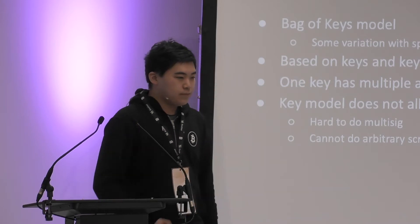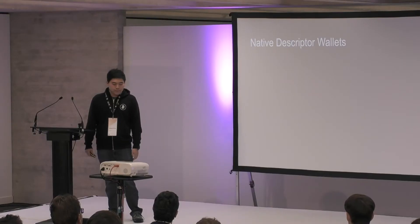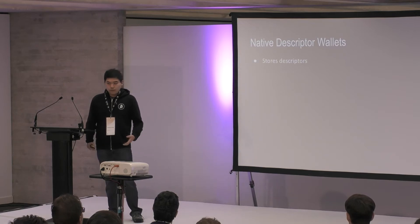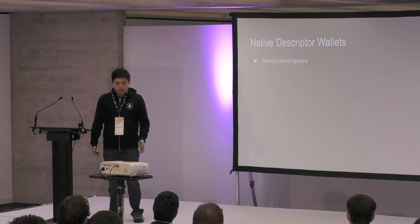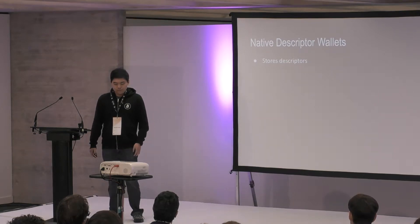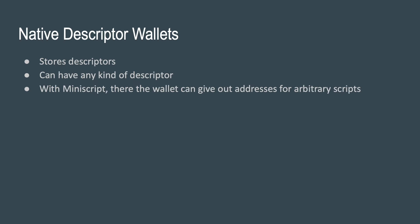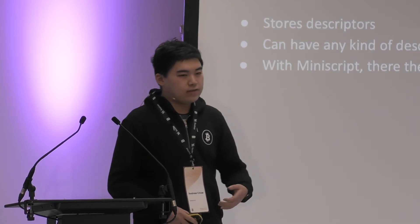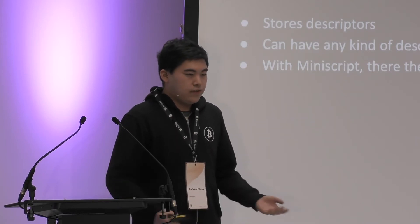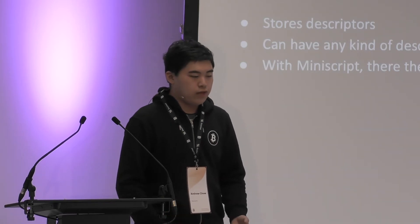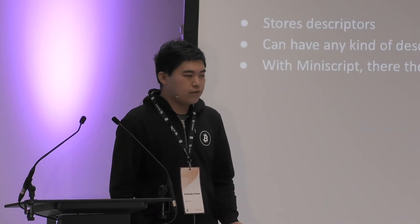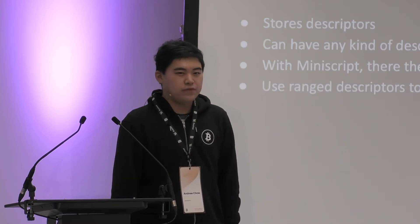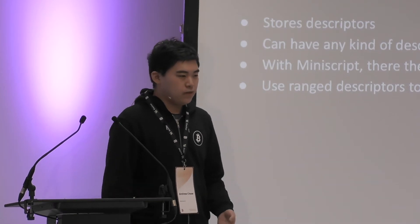The way we're going to solve this is by using descriptor wallets, and to do that we need to redesign the wallet architecture. Native descriptor wallets, as the name suggests, store descriptors. They can store any kind of descriptor, including multisig descriptors or, in the future, miniscript. So with native descriptor wallets, we can have a wallet that hands out addresses for multisigs and arbitrary scripts without the wallet software having to hard-code what to do with keys. We also use a specific type called a range descriptor that lets us generate multiple things from a single descriptor.